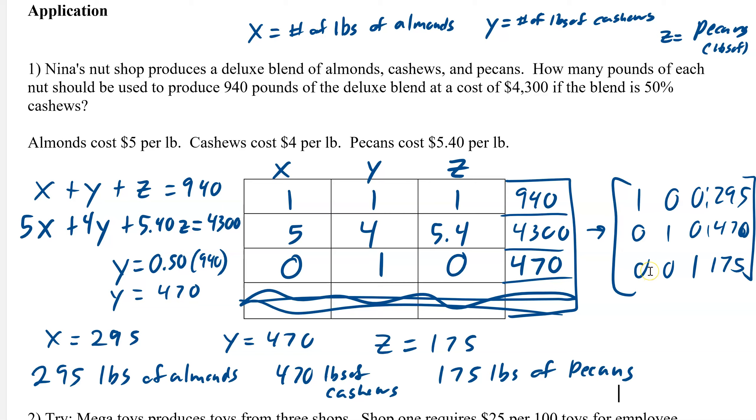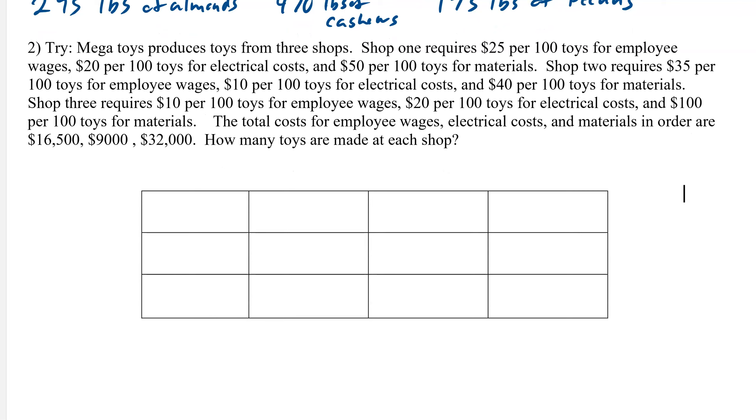This is Mega Toys, produces toys from three shops. Shop one requires that, shop two requires that, and shop three. We go through the whole thing, and you're really looking for what they're wanting us to find. It says how many toys are made at each shop. So X is shop one number of toys, Y is shop two number of toys, and Z is shop three number of toys.